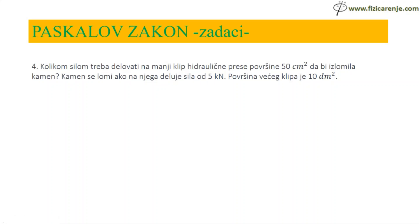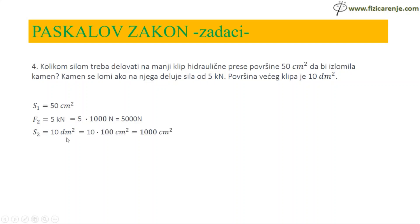Kolikom silom treba delovati na manji klip hidraulične prese površine 50 cm² da bi se izlomio kamen? Kamen se lomi ako na njega deluje sila od 5 kN. Površina većeg klipa je 10 dm². Zapišemo što nam je dato: S1 je 50 cm², F2 je 5 kN, S2 je 10 dm². Moram da sredim merne jedinice: 5 kN je 5000 N, a 10 dm² je 1000 cm².